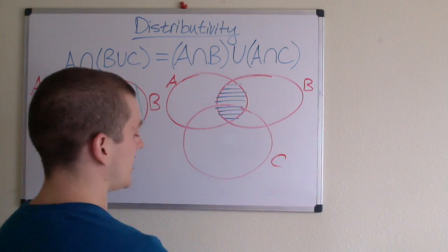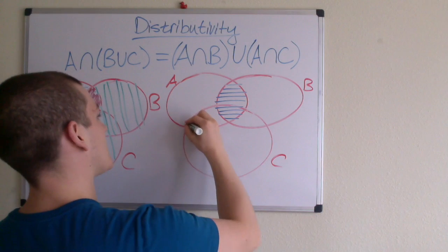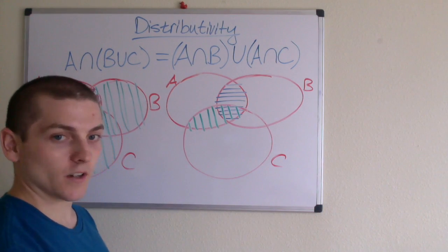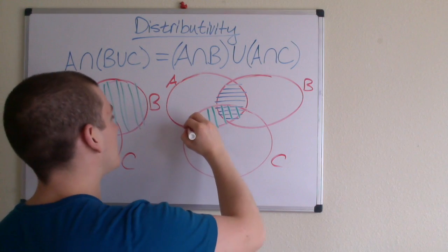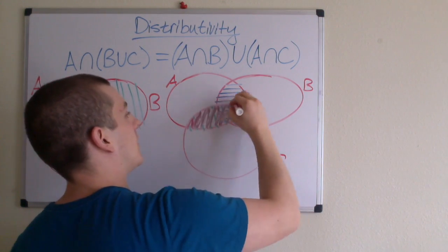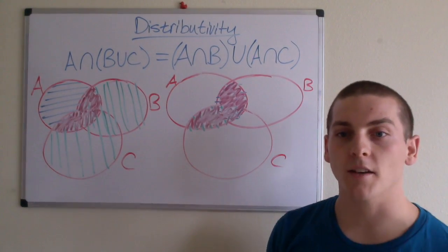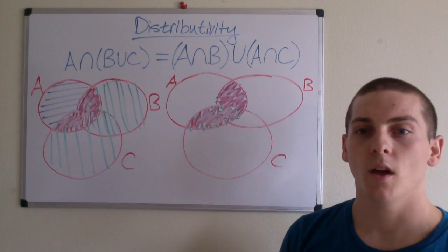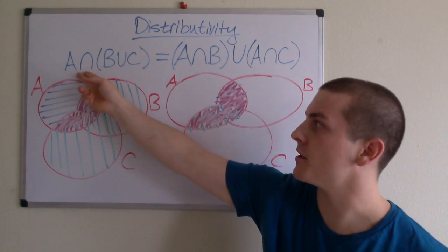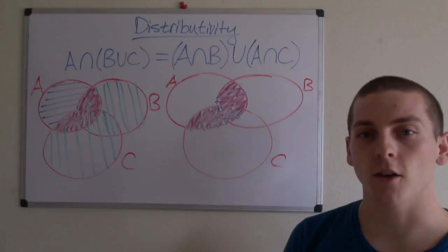We also have to find A intersection C, which is this region. And if we take the union of those two regions, we're left with all this. So it looks like they are in fact equal. To be more rigorous, we'll revisit the actual definition of intersection and union in the next video. We'll see you next time.